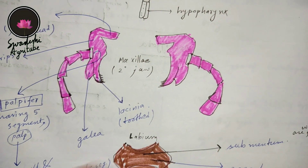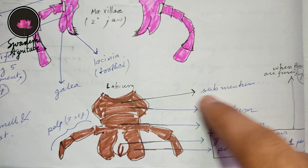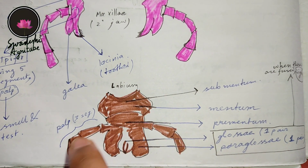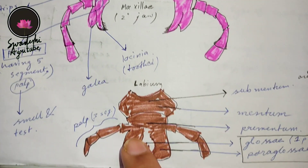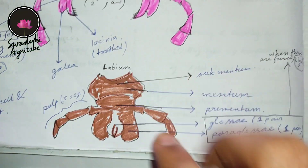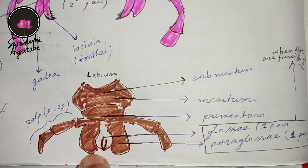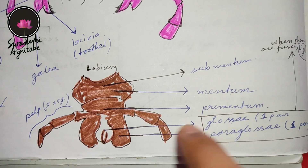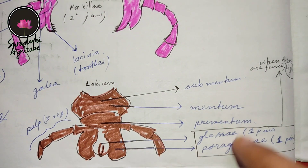Now talking about the labium — you can see it has three segments: submentum, mentum, and prementum. The prementum is important because it has the palps, which are three-segmented (compared to the five-segmented palps in the maxilla). The most important thing in the labium is the inner and outer structures: the inner structure is called glossa and the outer structure is called paraglossa. You have to remember this very carefully.